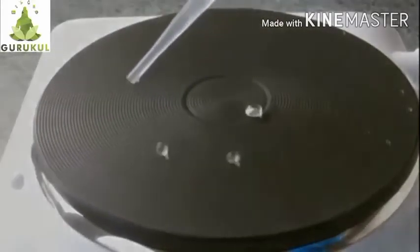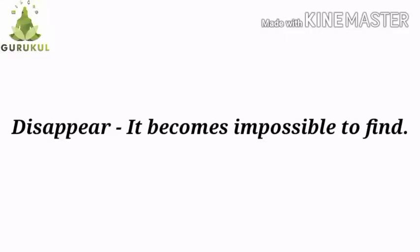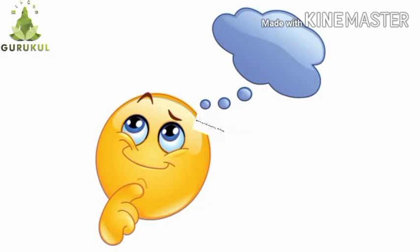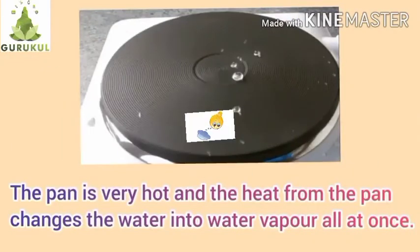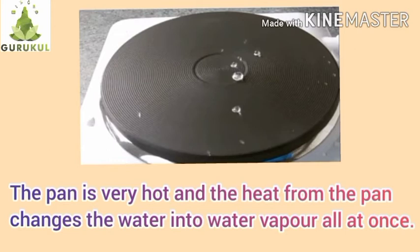Disappear means it becomes impossible to find. Why does this happen? Because the pan is very hot and the heat from the pan changes the water into water vapor all at once.